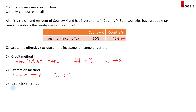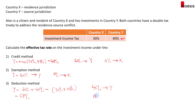For the deduction method, the effective tax rate is 30% plus 40%, minus the product of the two rates, which equals 58%. Of this, 40% goes to country Y. The remaining 18% goes to country X, calculated as the 30% rate reduced by the 40% already paid to country Y. That's how we get 18% going to country X.